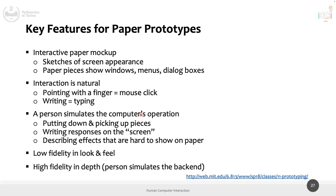Key features of a paper prototype: it should be interactive. The interaction involves various pieces of paper — some as big as the screen, others smaller — showing windows, menus, dialog boxes, what's happening in the application. They are sketches, drawn with no particular precision. The interaction is natural but not identical to real use — for instance, if you're prototyping a web application for desktop, you won't have a mouse; your finger pointing or touching something becomes clicking.